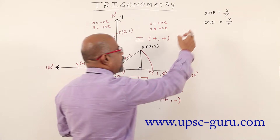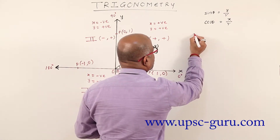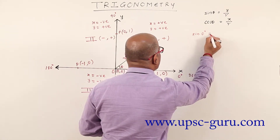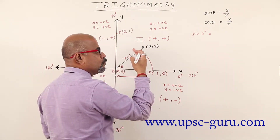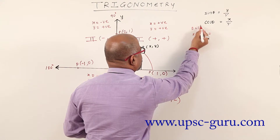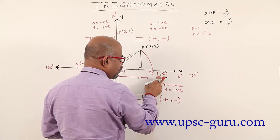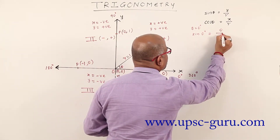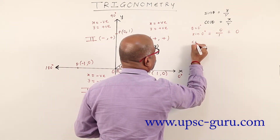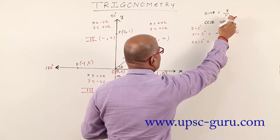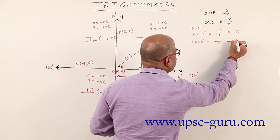Now we have sine theta equals y upon r, and cos theta equals x upon r. Let us check the values. Sin 0 degree: when P is on positive direction of x-axis, theta equals 0 degree. Sin 0 degree equals y upon r — value of y is 0 and r is 1, so 0 upon 1 is 0. Cos 0 degree equals x upon r — x is 1 and r is 1, giving us 1.